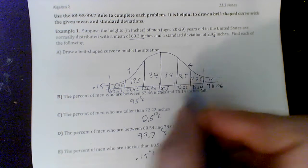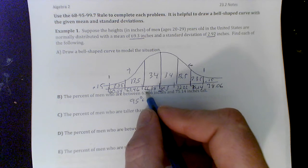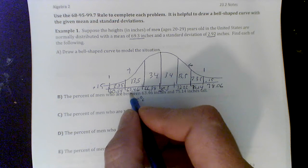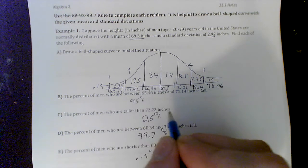And then by subtracting 2.92, I got 66.38, 63.46, and 60.54 all the way down.